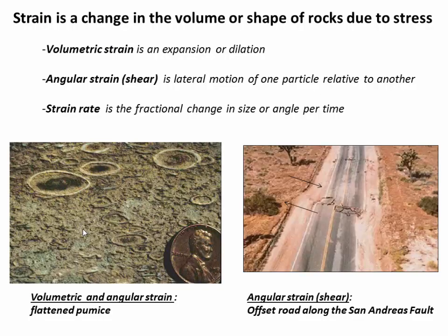First, let's define strain. Strain is deformation — it's a change in shape of rock in response to stress. Two main types are volumetric, which is an expansion or dilation, and angular strain, which is essentially the motion of one particle laterally past another. We also call angular strain shear.